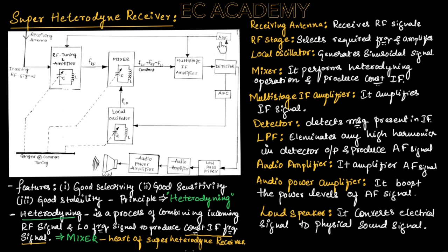Here we also have AGC, which is the automatic gain controller. It is used to control the gain of the RF tuning circuit and the multi-stage IF amplifier.